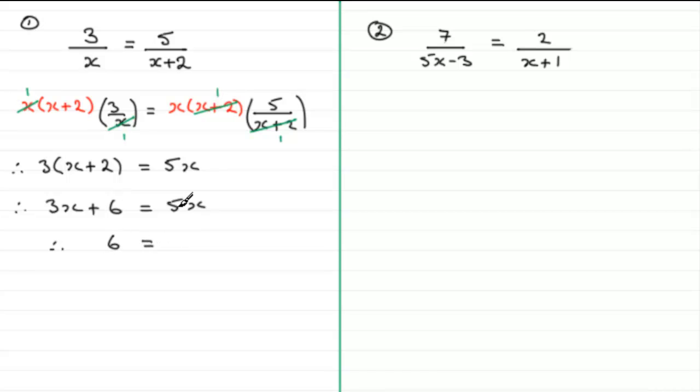And then for this one, 5x take away 3x leaves me with 2x. And now, I can divide both sides by 2. So, I get 6 divided by 2 is 3 and that equals 2x divided by 2 which is x. And I'll just finish with x equaling 3.